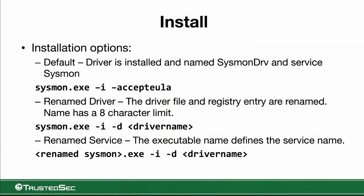For a simple installation, you use sysmon minus I and always accept the EULA. We also have two other parameters to help hide our Sysmon installation from an attacker: minus D, where we can specify a driver name limited to eight characters, and we can also rename the executable itself used for installation — that executable name will be taken as the service name.